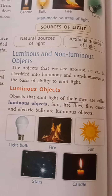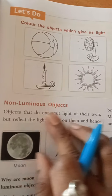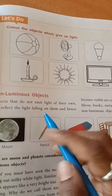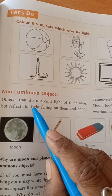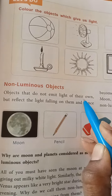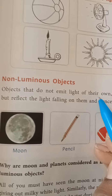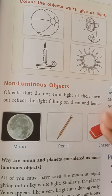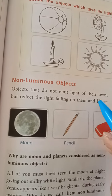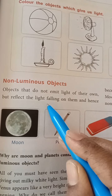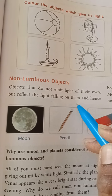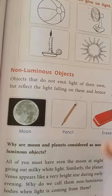Do you understand the topic of luminous objects? Next, non-luminous objects. Objects that do not emit light of their own, but reflect the light falling on them — opposite to luminous objects.